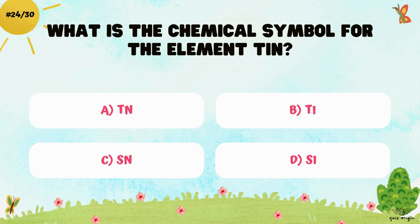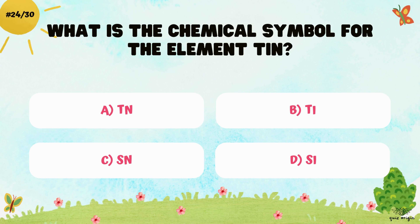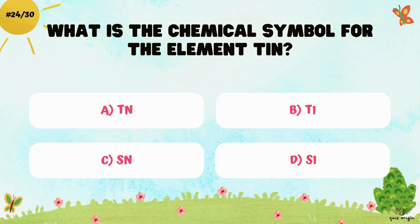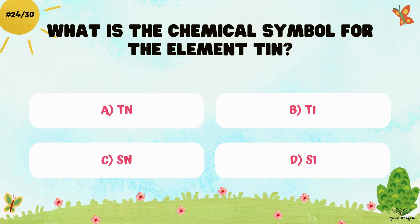What is the chemical symbol for the element tin? A. TN, B. Ti, C. Sn, and D. Si.